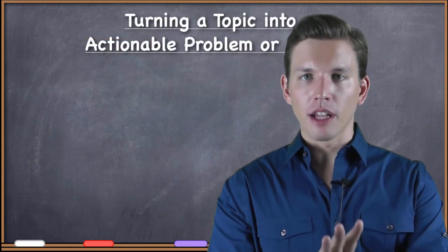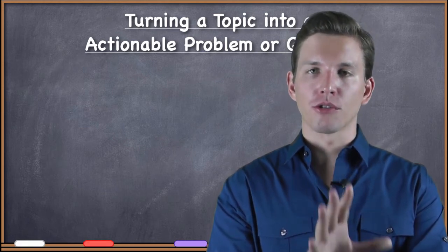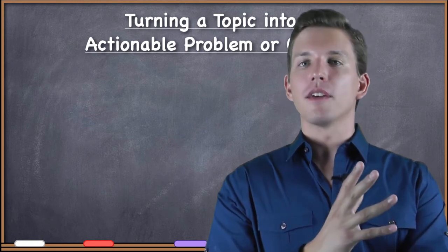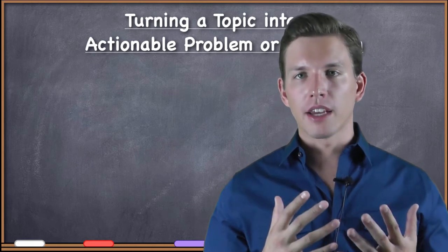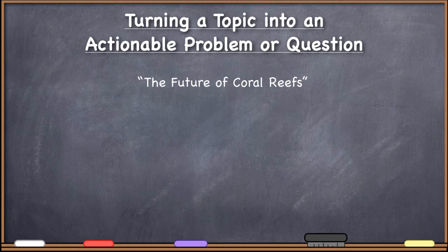Once you have a fully developed topic, how do you turn that into an actionable problem or question — one that's crisp and clear — in order to actually do GIS? Let me give you an example from one of my students. He wanted to do a GIS project and said 'I want to do a project on the future of coral reefs.' He was very interested in coral reefs, knew a lot about them, was studying GIS, and came up with this general idea: 'I would like to do a study about the future of coral reefs.'